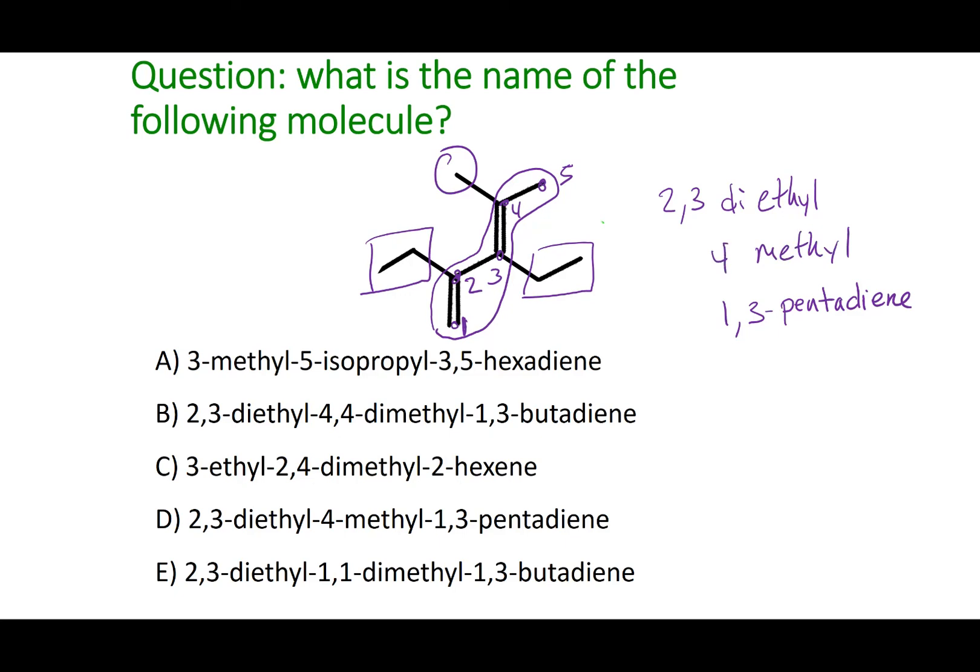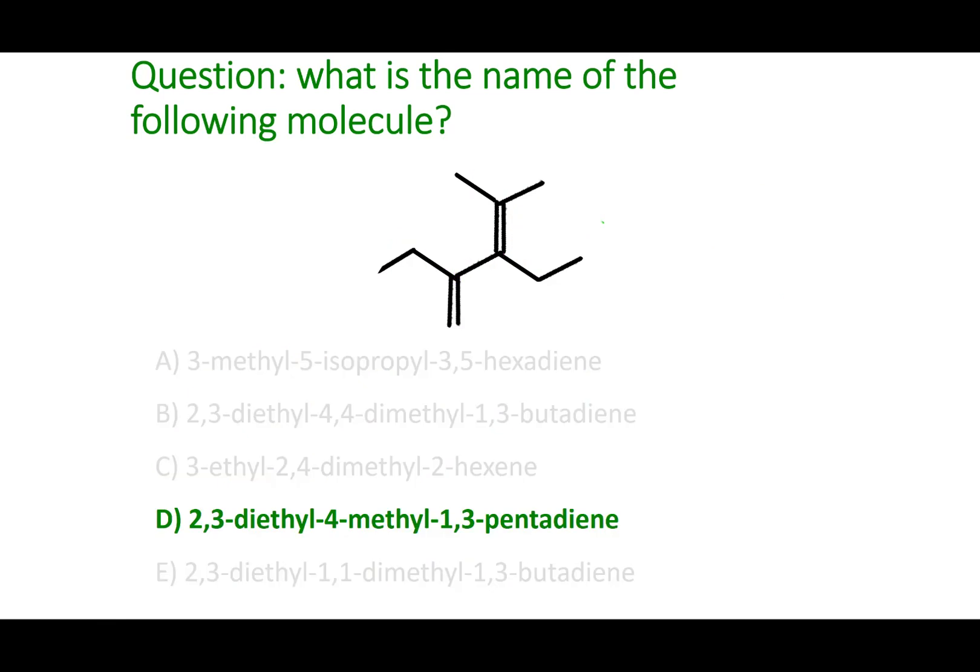So again, let's go ahead and string this together. Here's my parent. And I'm going to alphabetize my other substituents, putting them in front. This leads me to 2, 3-diethyl-4-methyl-1, 3-pentadiene. I hope that made sense, Chem 1C, and remember to stay safe.